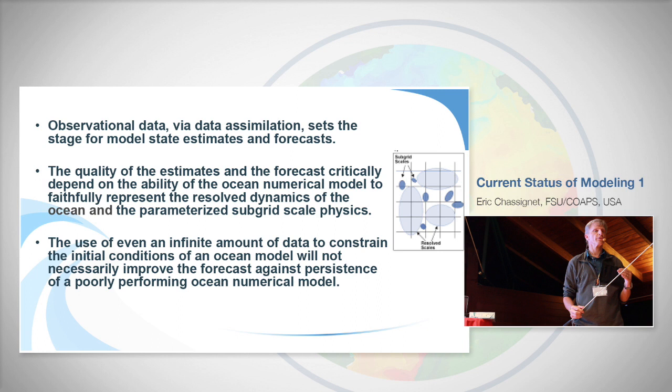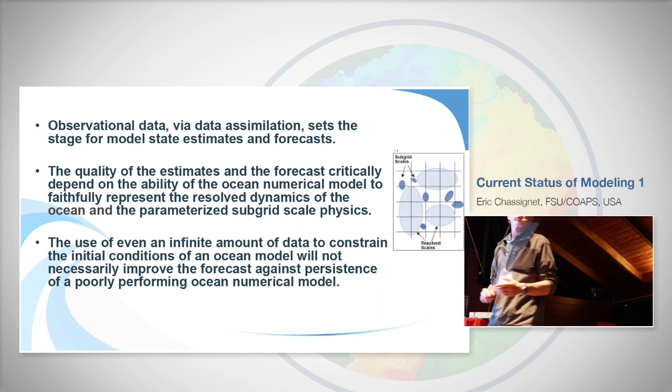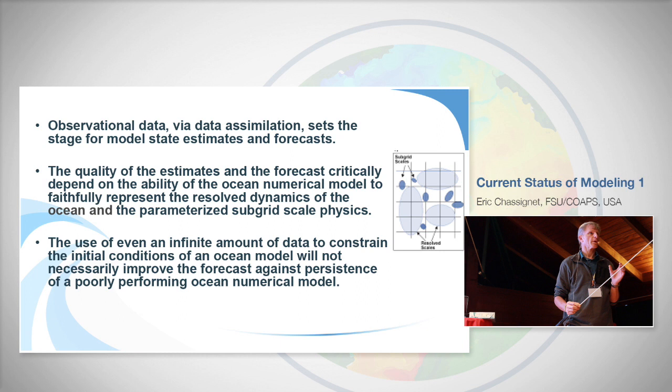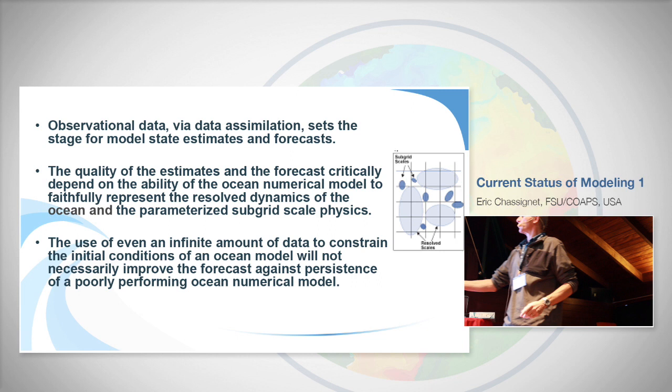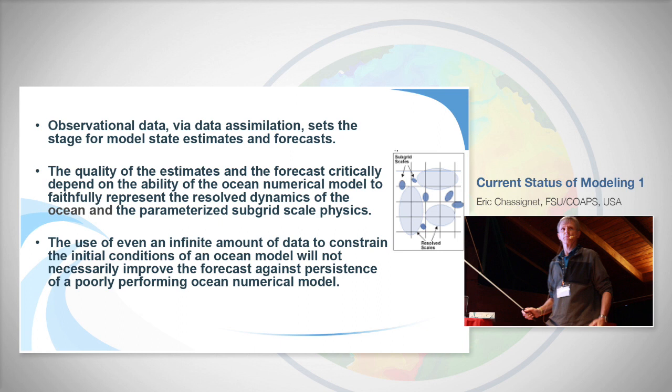If you have a bad ocean model that is biased, your forecast is going to be biased. Also important is that your grid represents reality — you're going to be able to represent some features, but others that are smaller than the grid size of your model are not going to be well represented, so they need to be parameterized. That has a strong impact on the capability of the model to represent features.